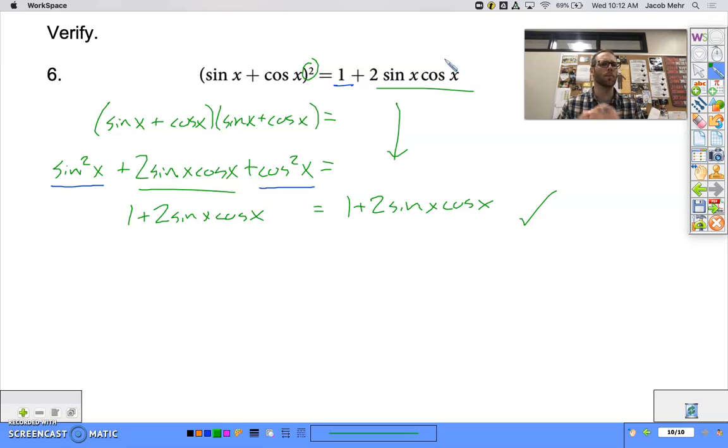So to verify identities, try to pick the more complicated side, make it simple, keep those equal signs in line, work through it, peek back at what your target is. See if you can't get there. Again, this takes work. This takes practice. This is a fairly simple one. Over the course of the next week or two, they'll get a little more complicated. But let's practice with some of these simpler ones to begin with.